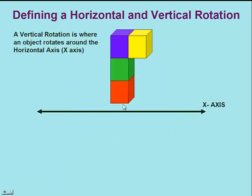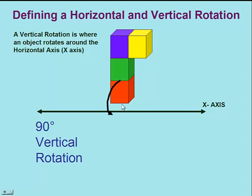We will now take the same object and rotate it vertically around the x-axis. We'll start with a 90-degree vertical rotation towards you. So the top part of the object will now appear as the front part of the object.